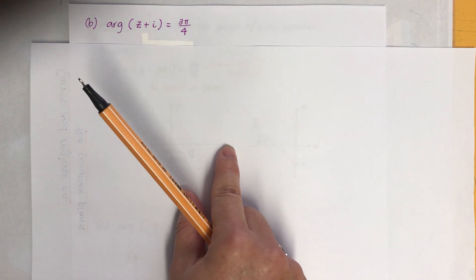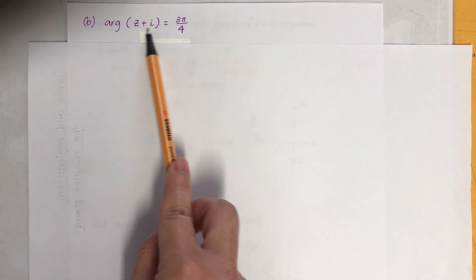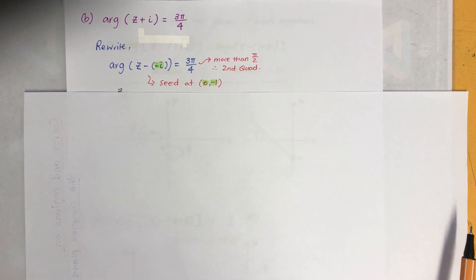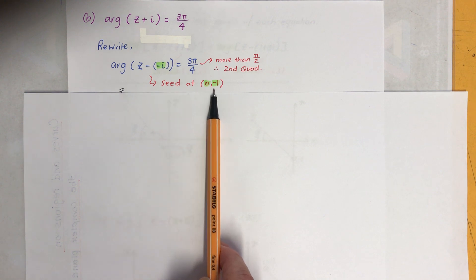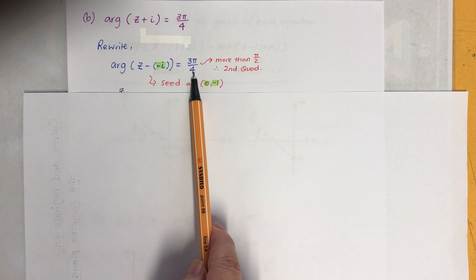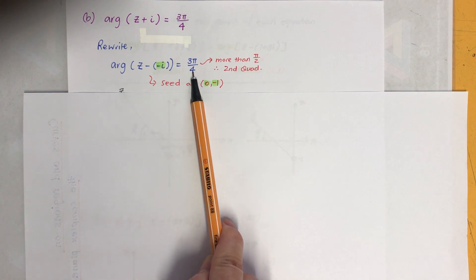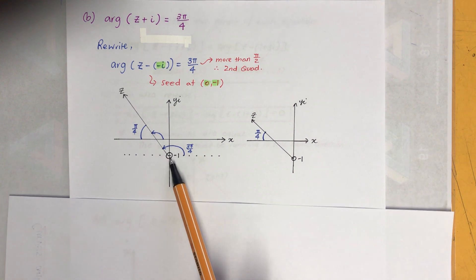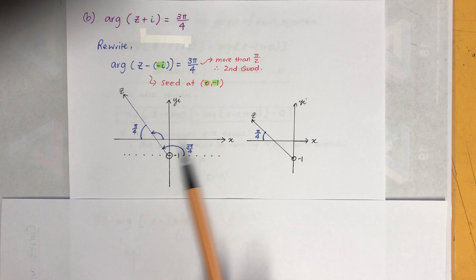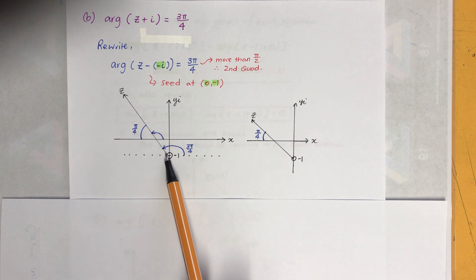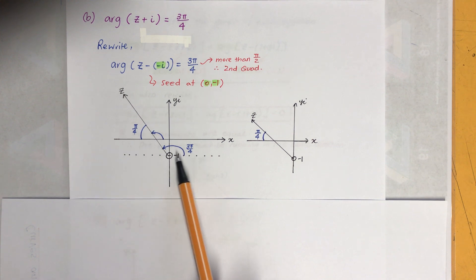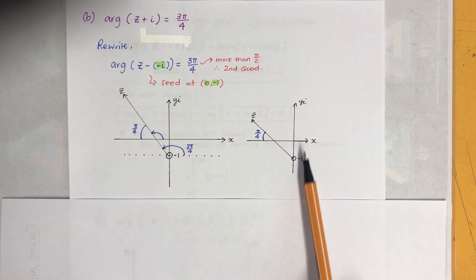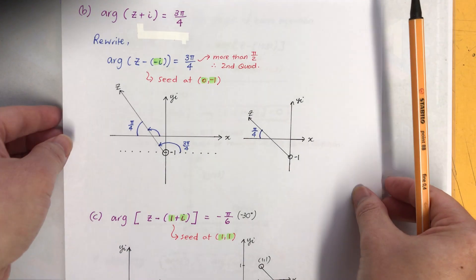Part b: it's not in the form of minus something, so we need to rewrite it and analyze it before sketching. The seed starting point comes out to (0, -1). The angle is 3π/4 — since it's more than π/4 it's in the second quadrant, not the first, so be careful. Draw the dotted line parallel to the x-axis at (0, -1), then go anti-clockwise 3π/4, since it's a positive angle.